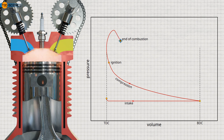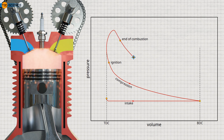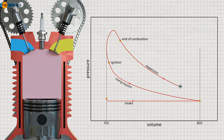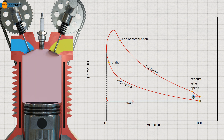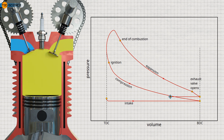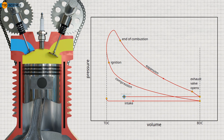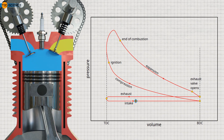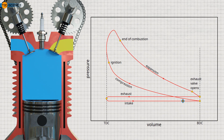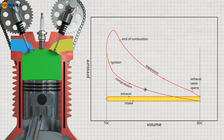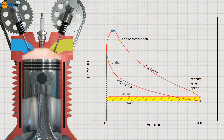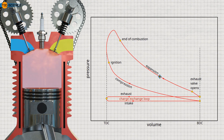This drives the piston downwards, and the expanding gases convert thermal energy into mechanical energy, which is transmitted to the crankshaft. After the gases have expanded, the exhaust valve opens and the burned gases are expelled at low overpressure as they cool. The process then begins again. The gases in the cylinder are generally referred to as the charge. The resulting loop in the diagram during the exhaust and intake of the charge is therefore called the charge-exchange loop.